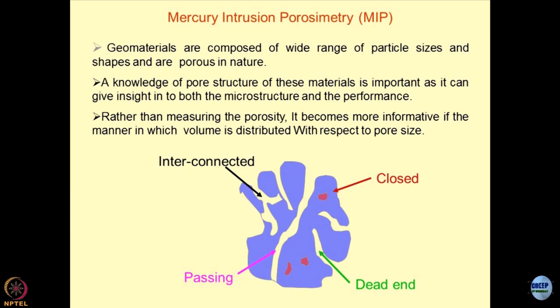Porosimetry is becoming very important in environmental geomechanics because pores play an important role in any mechanism occurring in geomaterials — transport of mass flux, whether thermal, electrical, chemical, biological, radiological, or magnetic. Until now, we have been talking only about particle size distribution in conventional geomechanics, but particle size distribution does not give much idea about geometrical characteristics unless you really talk about the pore structure and shapes.